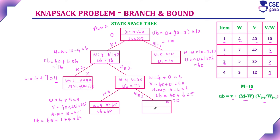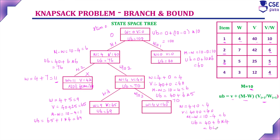Without item 3: weight is 4 and value is 40. M minus W is 10 minus 4 = 6. Upper bound value: V = 40 plus 6 multiplied by value-by-weight ratio of the next item, which is 4. So this gives upper bound 64. Comparing: with item 3 gives upper bound 69, without gives 64. The maximum upper bound value is 69. So we continue with adding the third item into the knapsack.